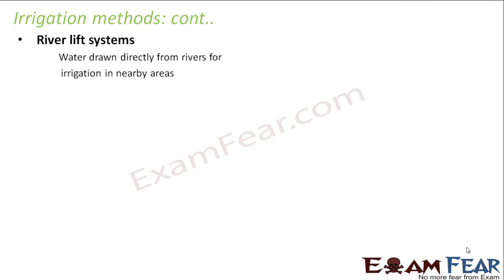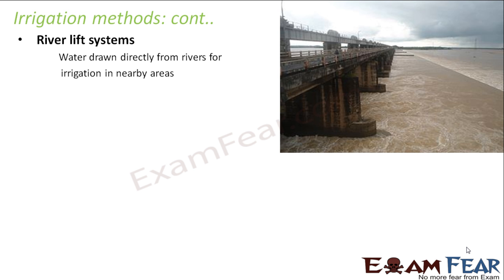The third method is river lift systems. In certain places, the canal flow is not sufficient for irrigation. In such places, water is directly drawn from rivers for irrigation in nearby areas. For example, in the Godavari river basin in Andhra Pradesh, water is taken directly from the Godavari river — instead of flowing through canals and distributaries — and used for irrigation in the nearby areas.